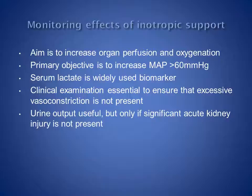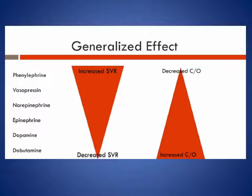This slide graphically illustrates the generalised effects of the different inotropes discussed, with dobutamine causing the greatest increase in cardiac output and having the least effect on SVR, and vasopressin causing the greatest increase in SVR and also the greatest reduction in cardiac output.